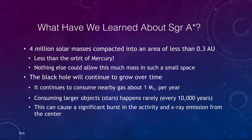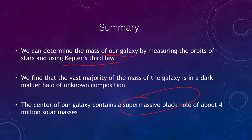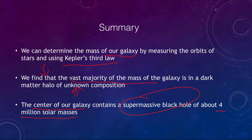To summarize: we can determine the mass of our galaxy and the mass of the supermassive black hole at its center using Kepler's third law — mass equals the cube of the semi-major axis divided by the square of the period. When we do this for our galaxy, we find that the vast majority of the galaxy's mass, far more than what we can see, is in a dark matter halo of unknown composition. The center of our galaxy contains a supermassive black hole of about 4 million solar masses — though by galactic standards that's actually a relatively small one, as other galaxies have far larger black holes.